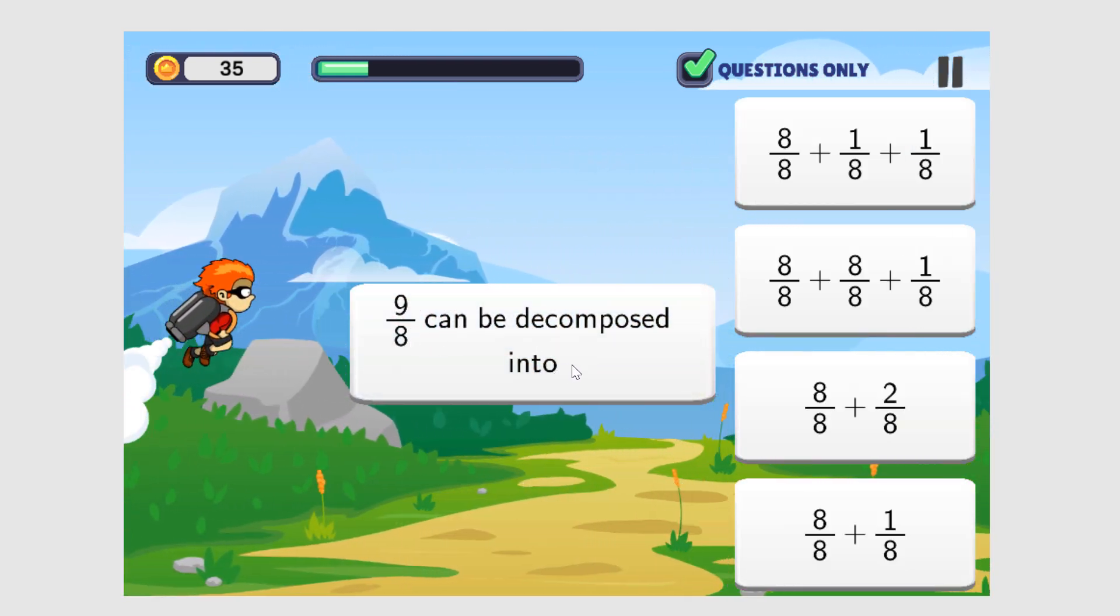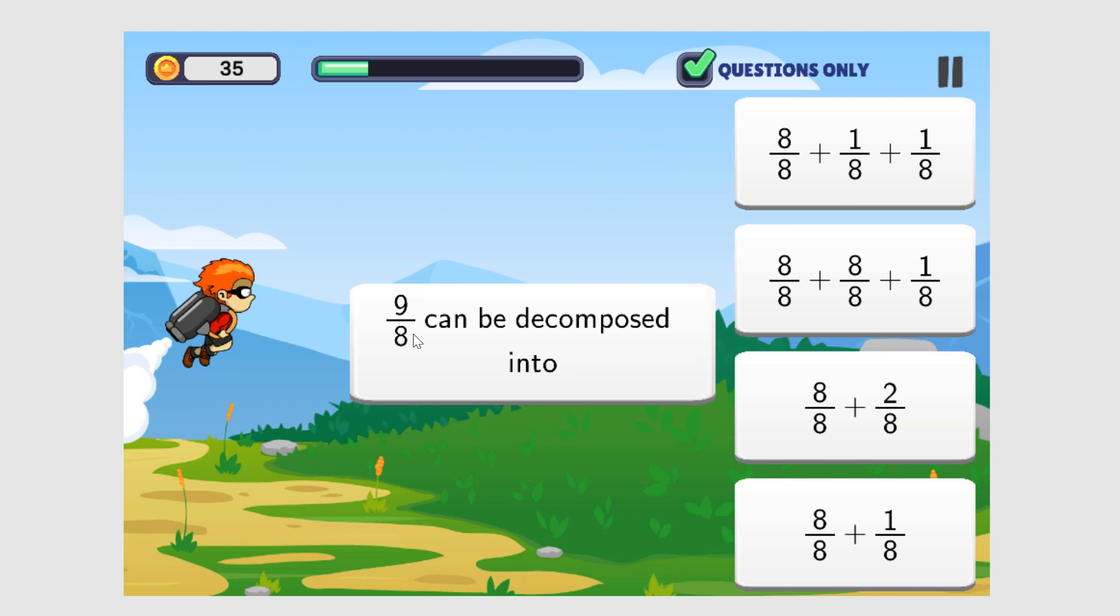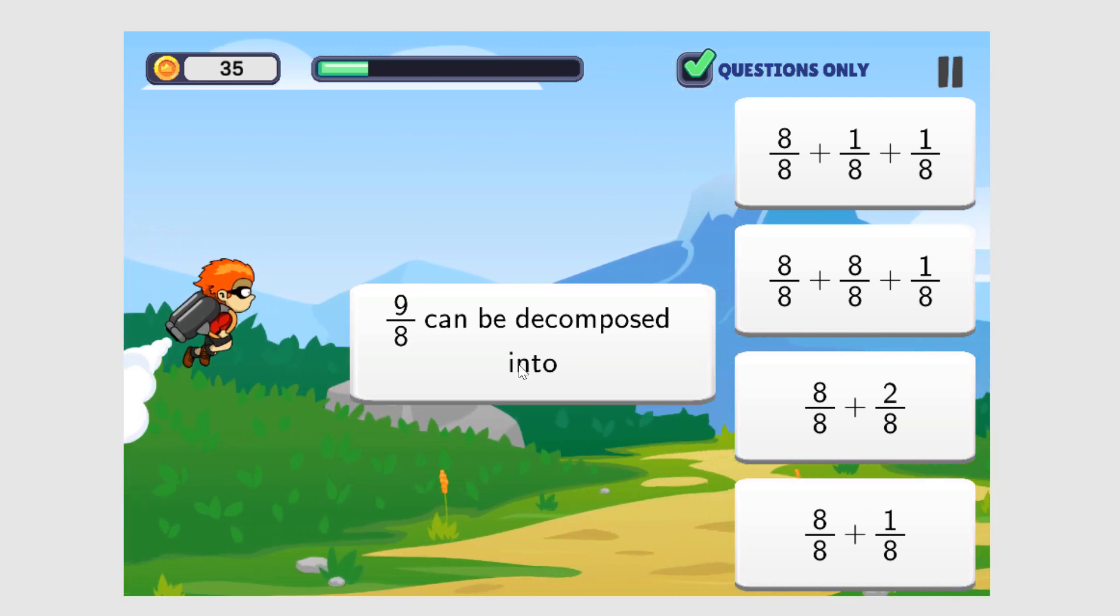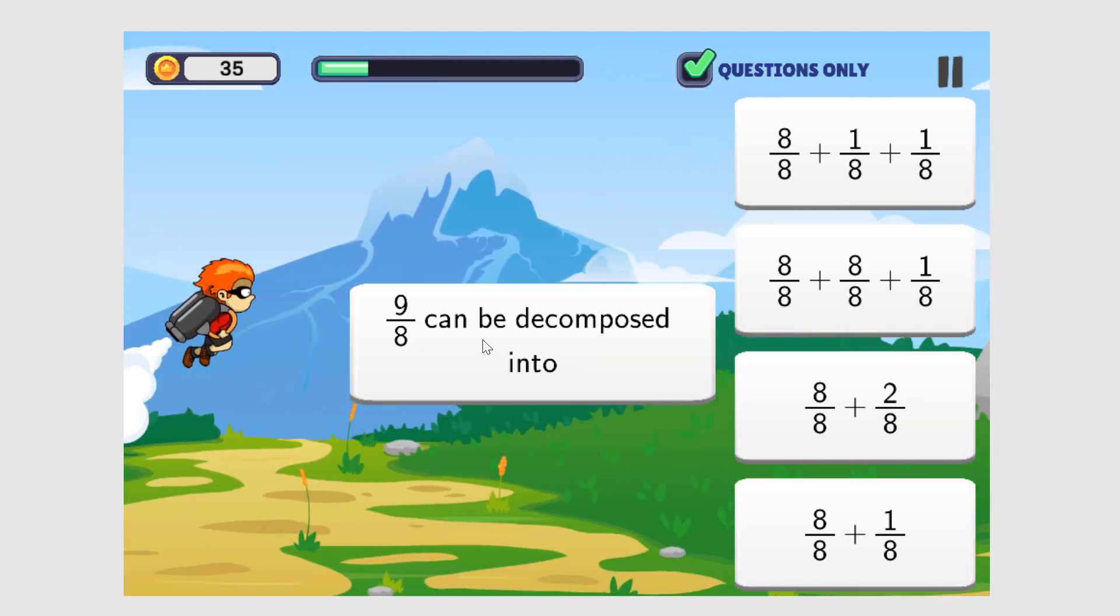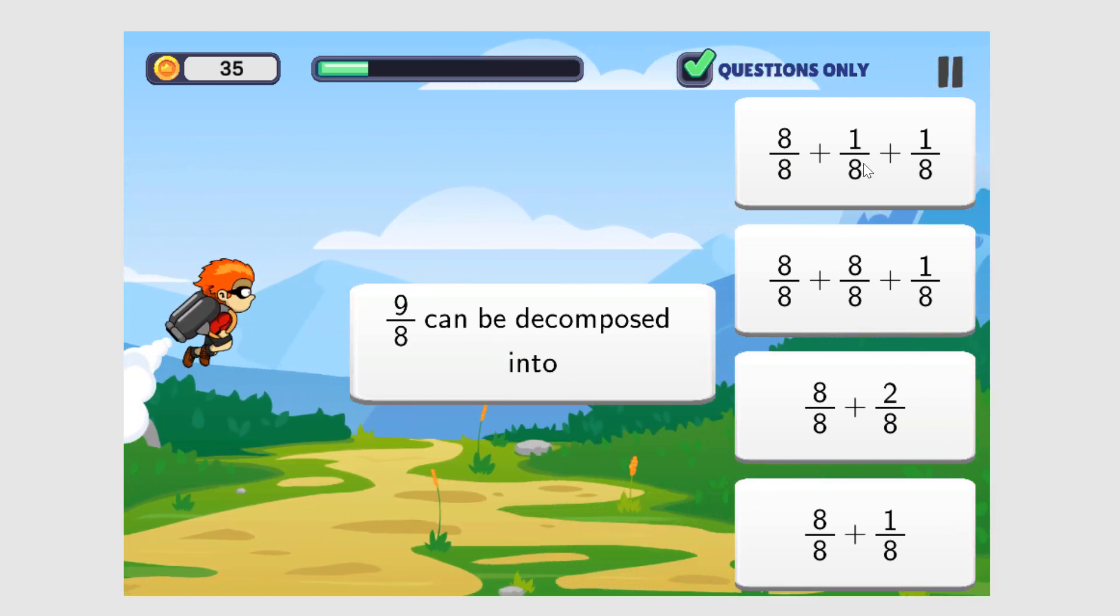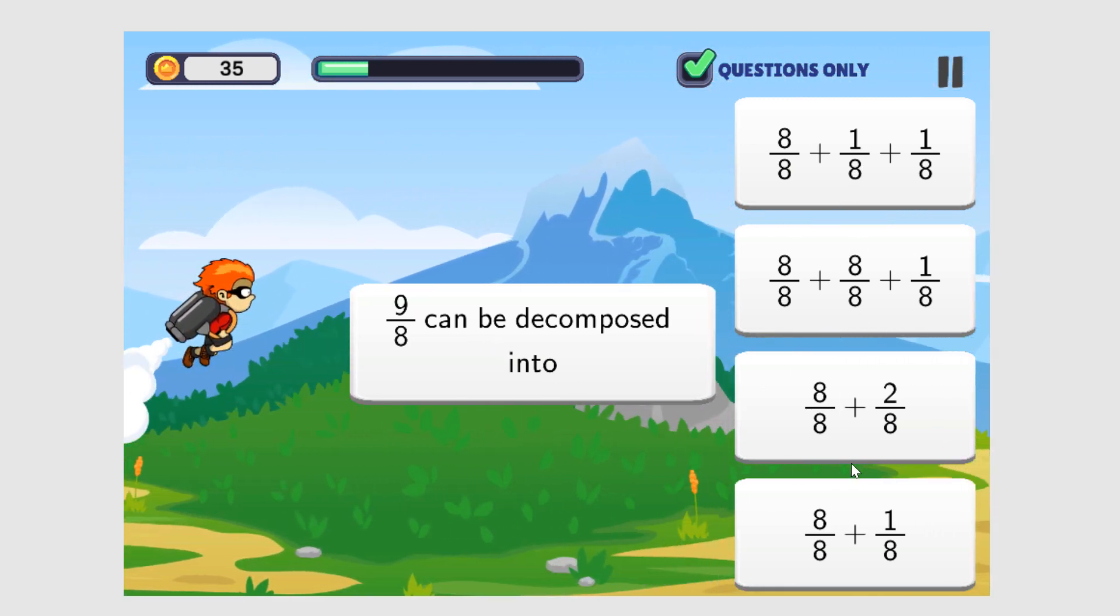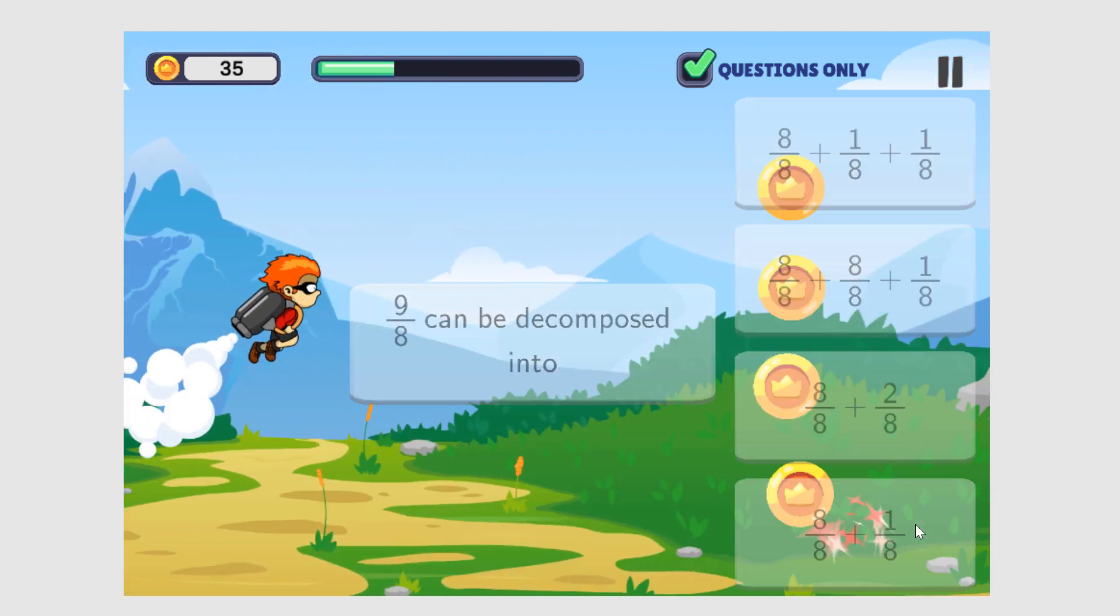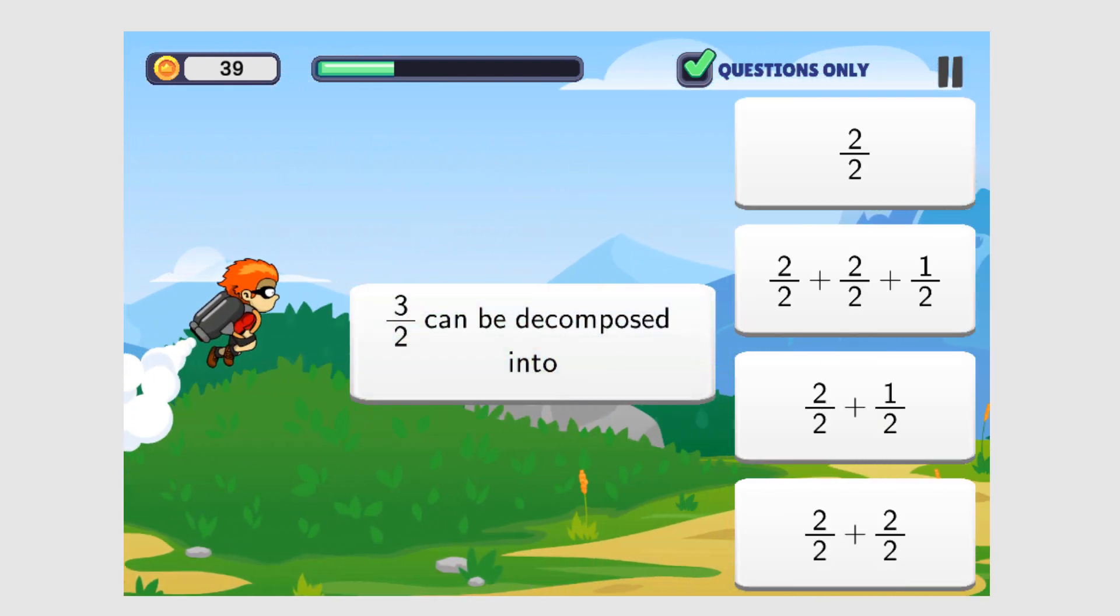Nine-eighths can be decomposed into... We'll simplify nine-eighths. Nine divided by eight is one with a remainder of one. So the answer is one and one-eighth. Which of these represents one and one-eighth? Right here, one and one-eighth.